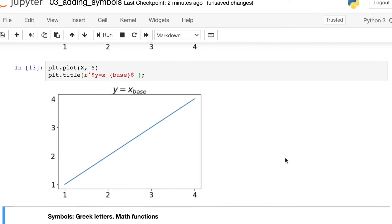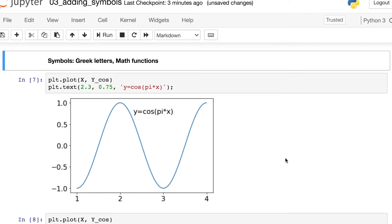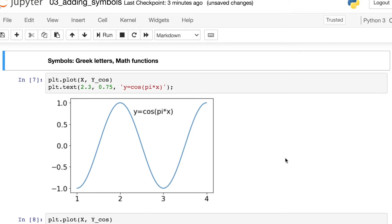Okay, so we've seen superscripts and subscripts. What about letters and math functions? So in this plot, Y equals cosine of pi times X.